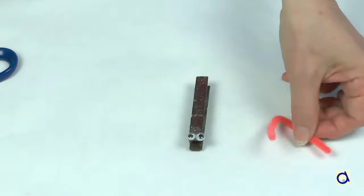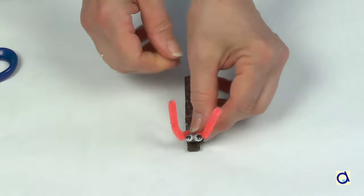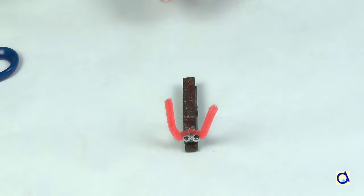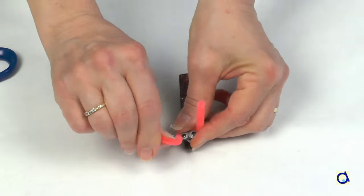Take a piece of pipe cleaner of your choice to represent the antennas of the butterfly. Glue the antennas behind the eyes.